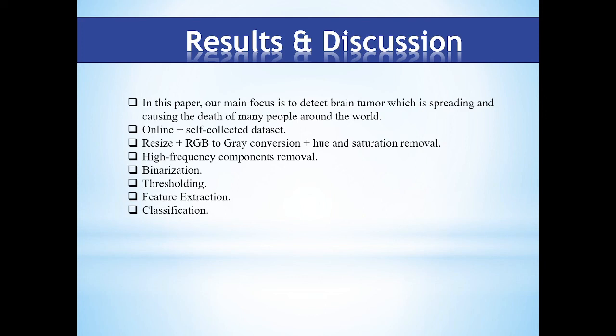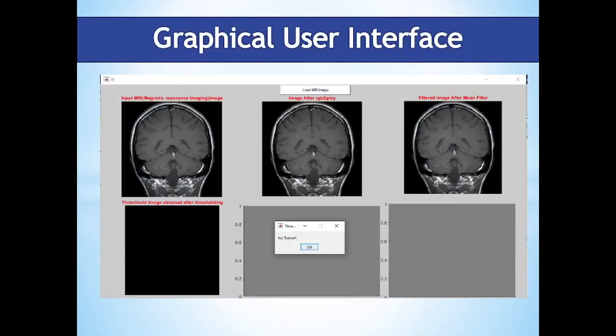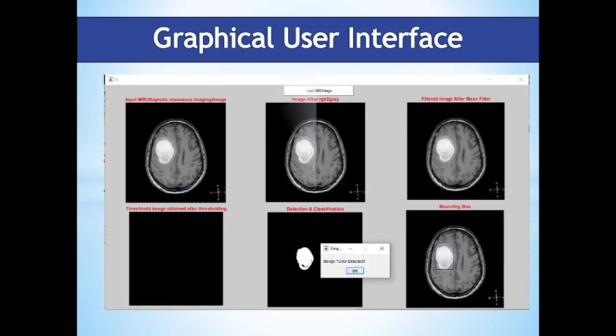To display all results, we created a user- and doctor-friendly GUI. A button loads the image and plots all results, including the input MRI image, RGB to grayscale image, median filter image, image after thresholding, image after classification and tumor detection, and the final image showing the bounding box in case of tumor detection. One figure shows the GUI output for a normal MRI input, and another shows the GUI output for a brain tumor MRI input.